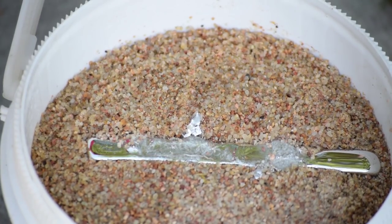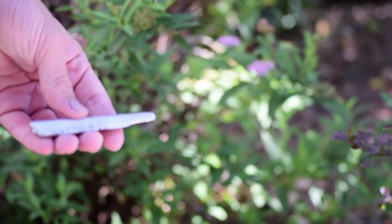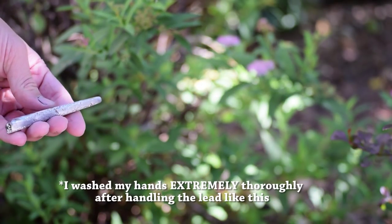The first step is to cast a lead bar. I melted the lead with my blowtorch in a steel pan and cast it in some sand. After cooling, here's what the lead bar looked like.